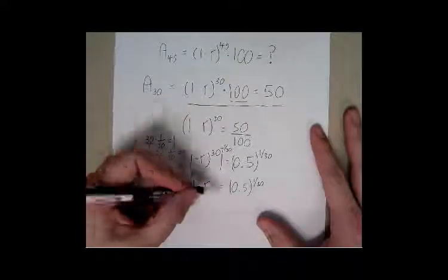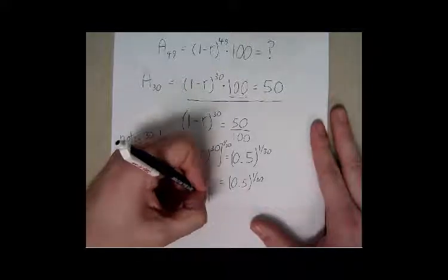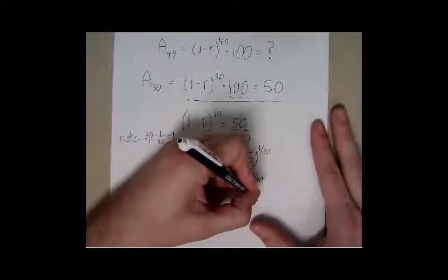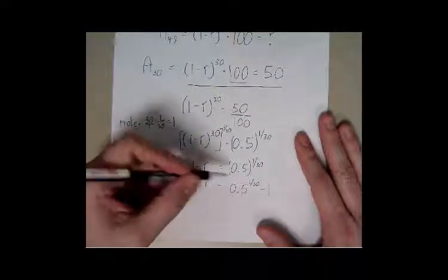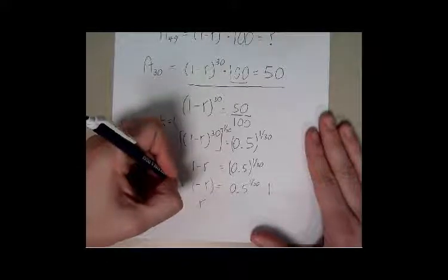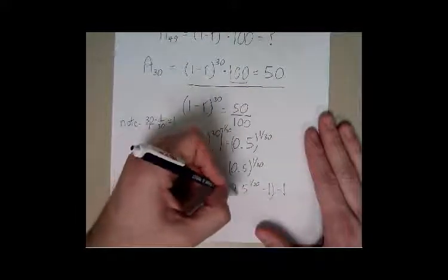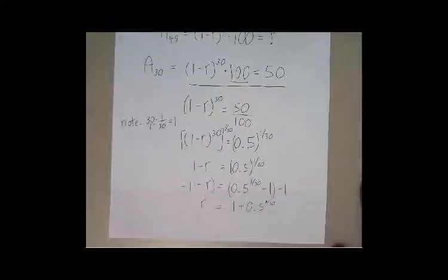Now we have a few more things to do to get R by itself. We start by subtracting 1 from both sides, and then we need to get rid of the negative sign. We can multiply both sides by negative 1, which will make R positive. So R will equal 1 minus 0.5 raised to the 1 over 30.